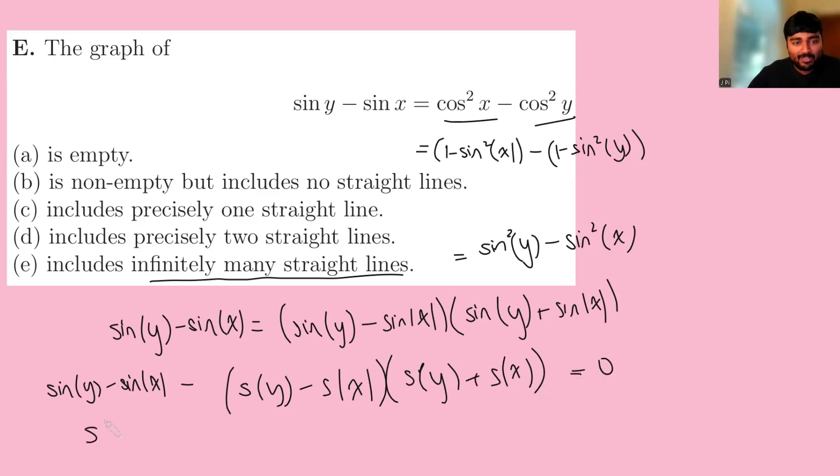Now we can factor out the sine y minus sine x. And then we get one minus sine of y plus sine of x equals zero. And now we just need to work out whether this graph has any straight lines, and if it does, how many does it have?